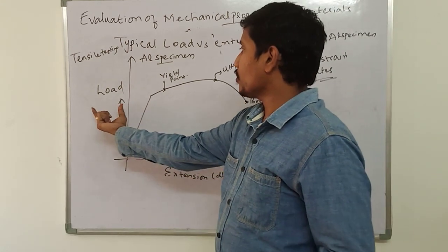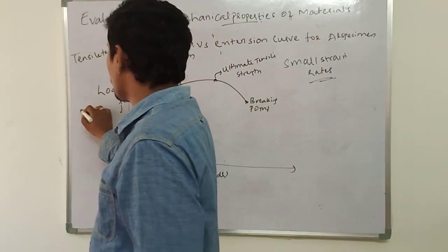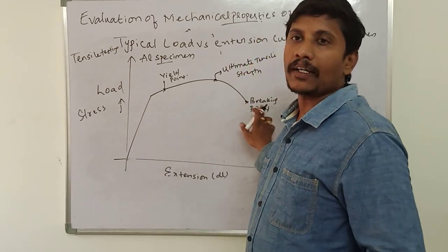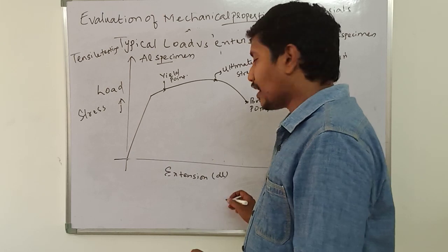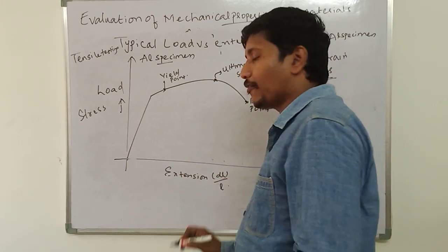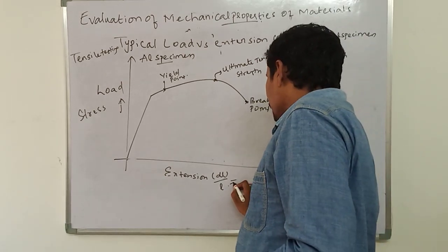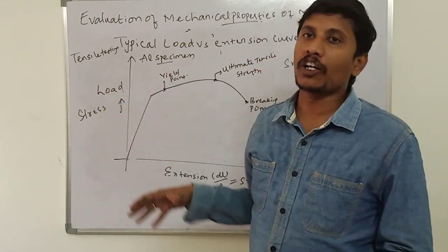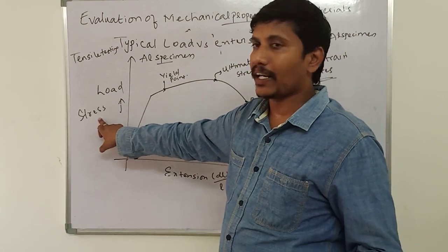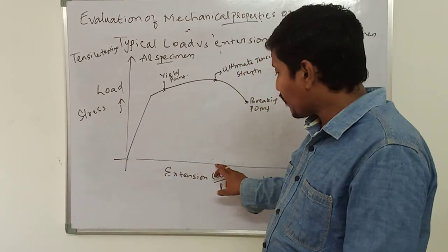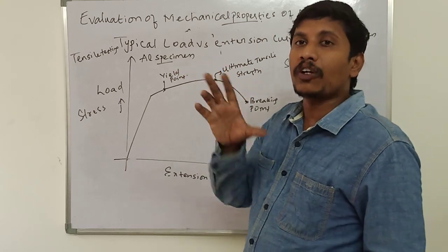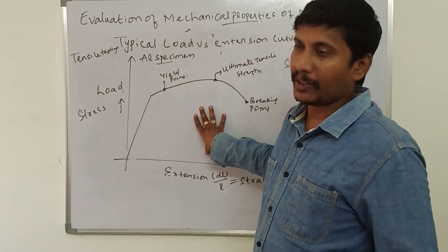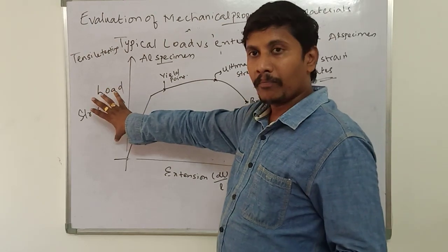If you take load divided by area using the initial cross-sectional area, it becomes stress. If you divide extension by the initial gauge length between the two permanent marks, it becomes strain. So the stress-strain curves also look similar, because we are dividing by two constants.